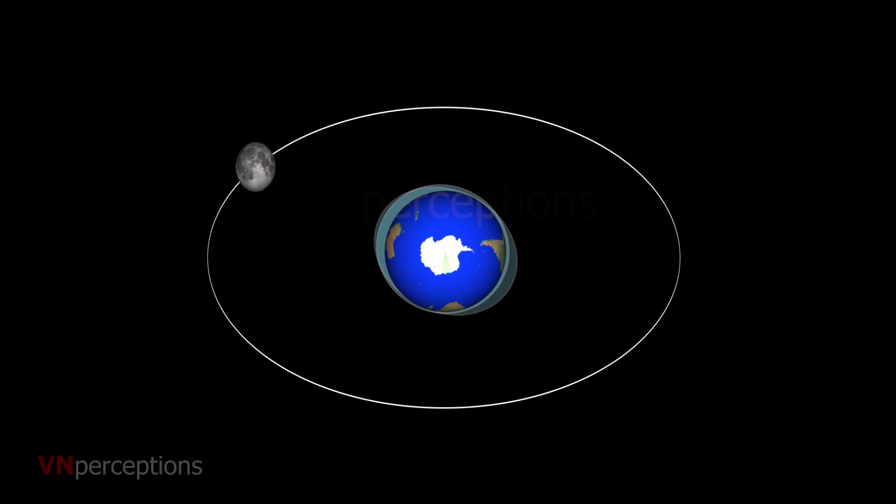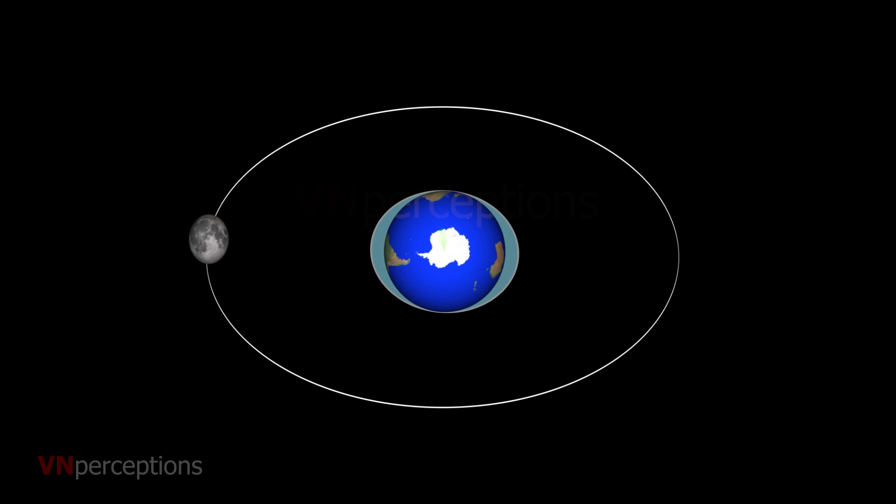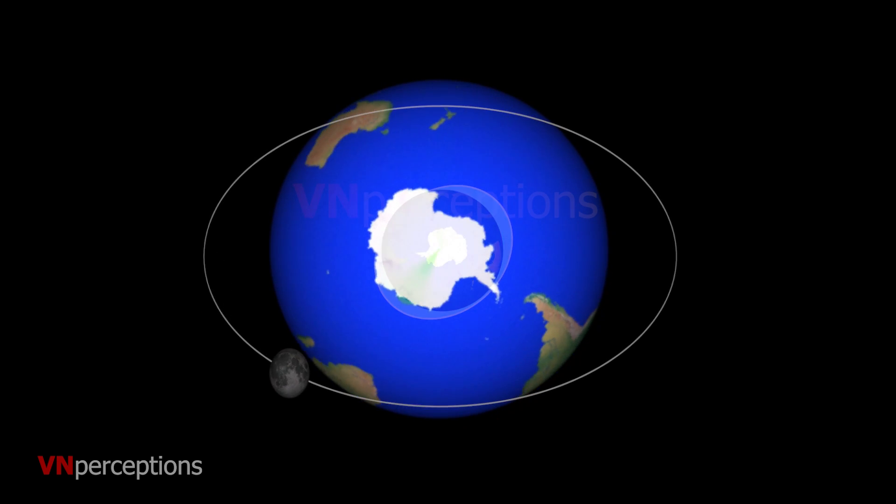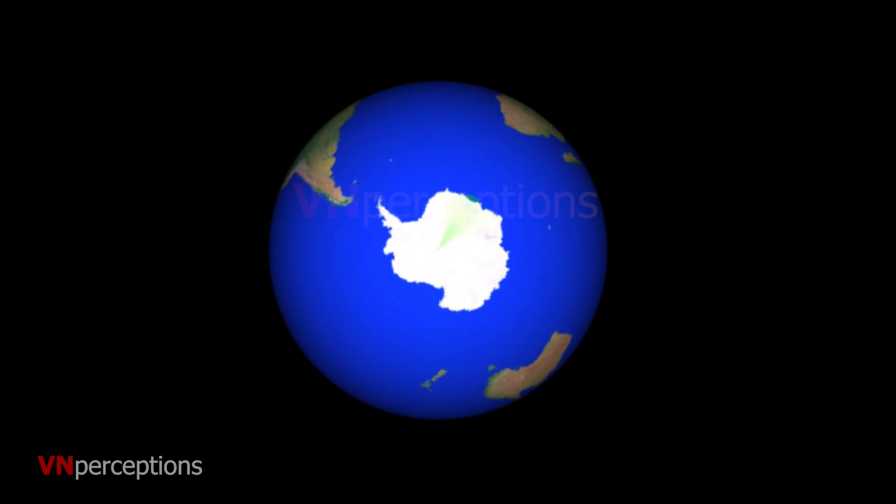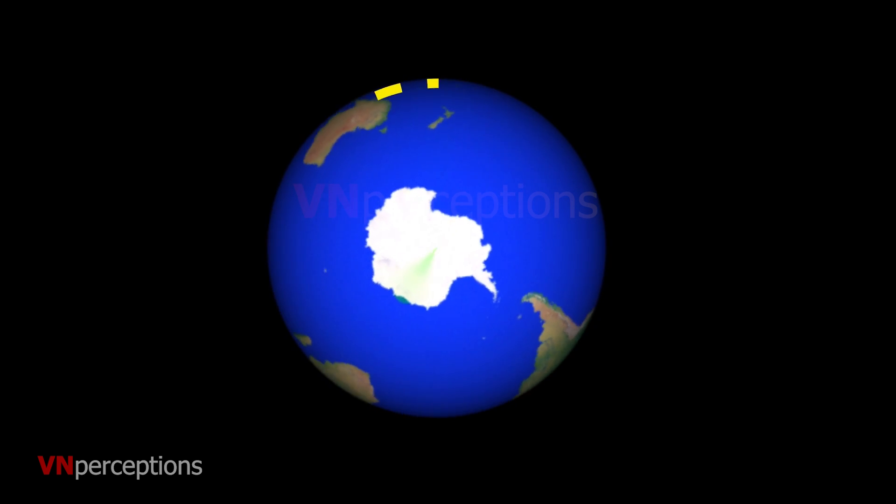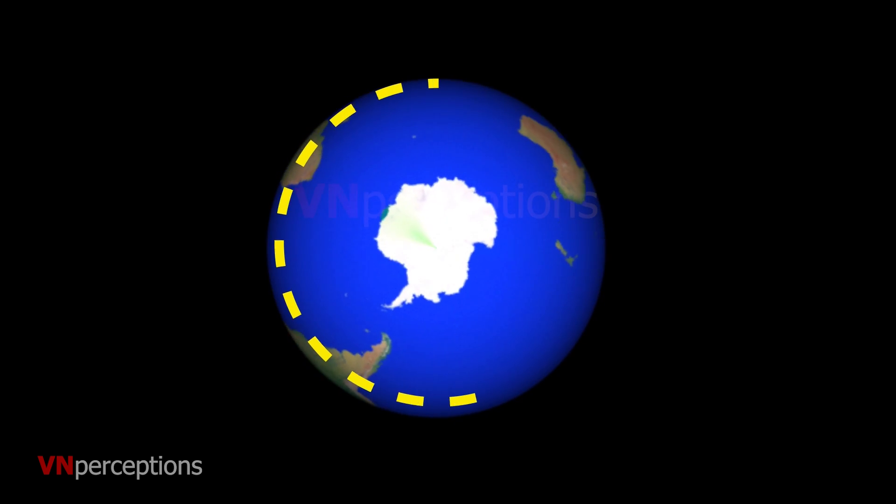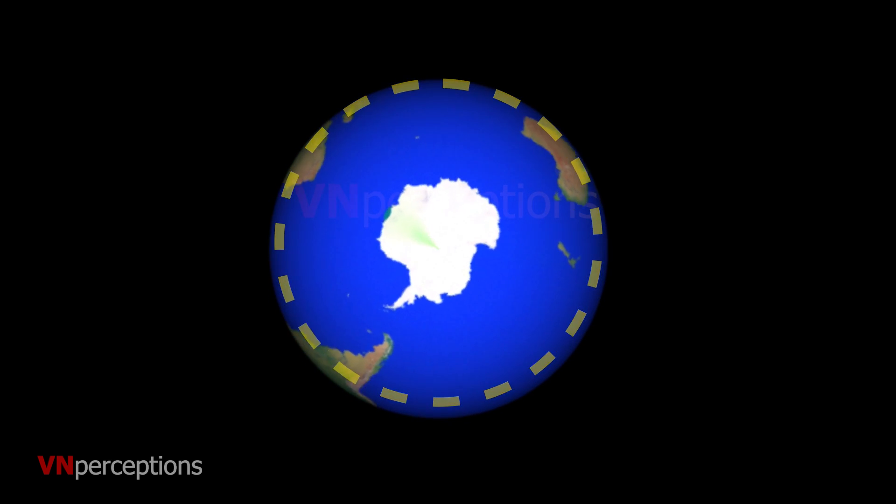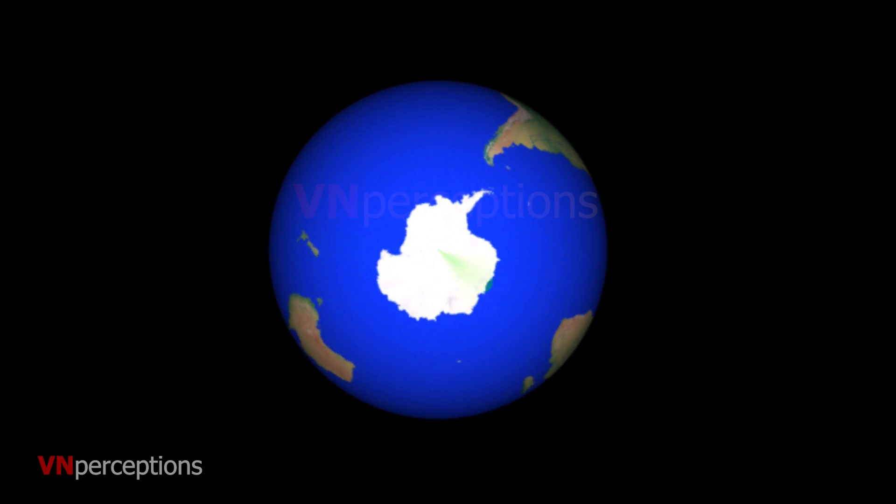The earth completes one rotation in roughly 24 hours and every place should experience a tide after 12 hours. But this never happens.